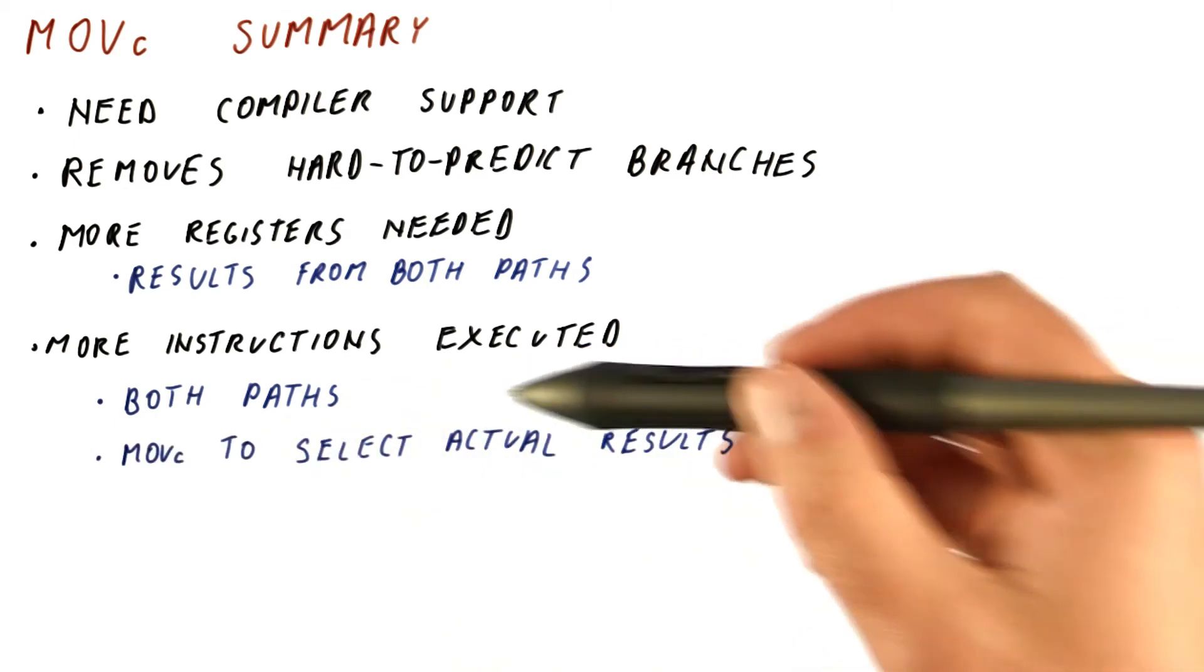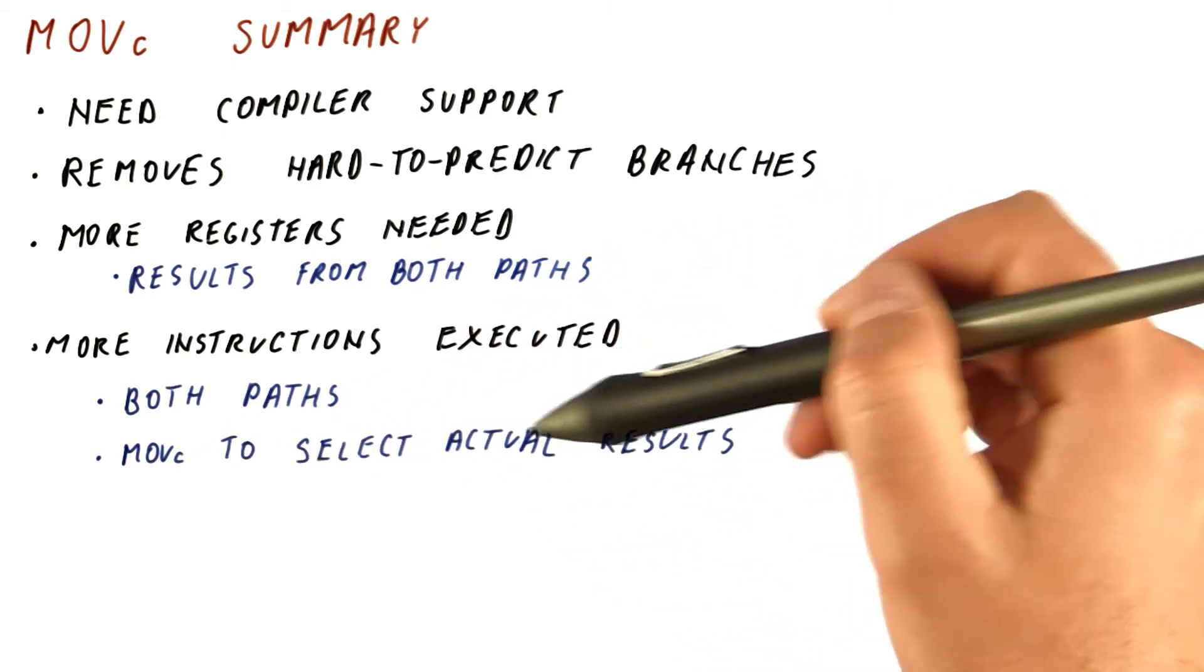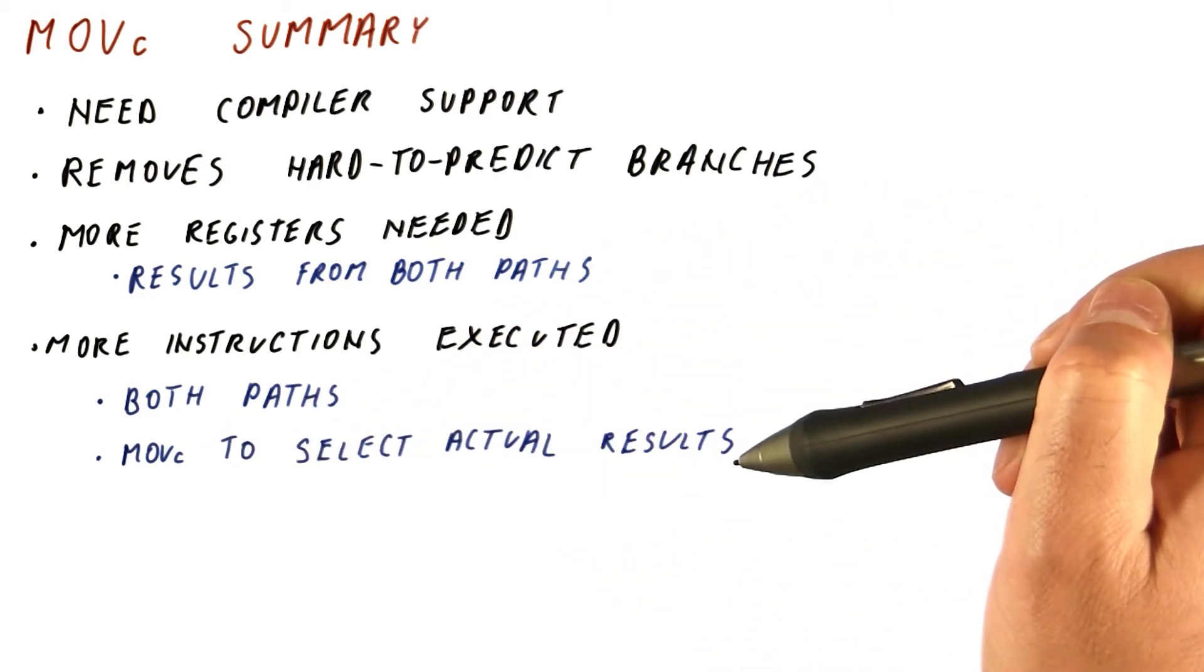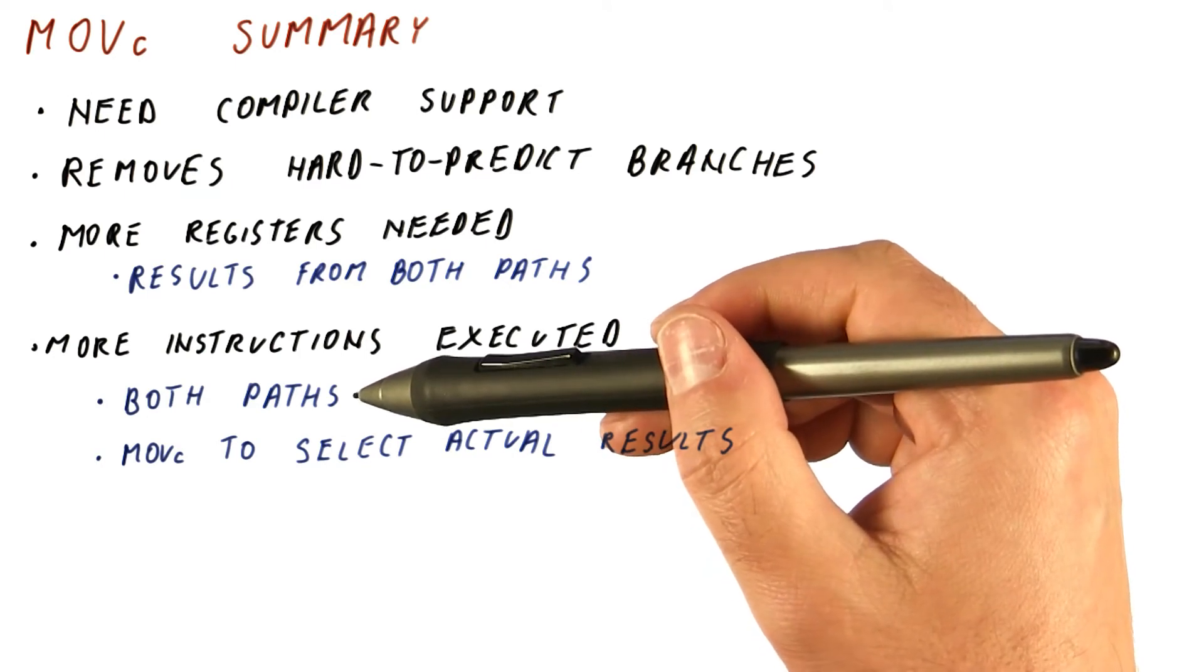Also, we need to add the conditional move instructions to select the actual results, the ones we want to keep, from among the results that we have generated from both paths.